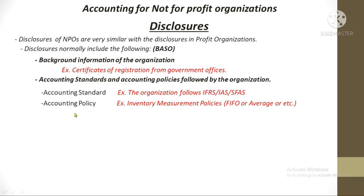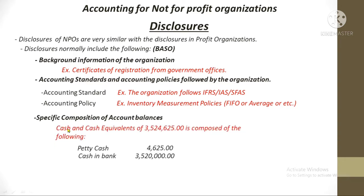S stands for the specific breakdown or composition of accounts. For example, cash and cash equivalents of 3,524,625 is composed of petty cash of 4,625 and cash in bank of 3,520,000. The cash in bank can be further broken down by individual bank account, since an organization normally has multiple bank accounts possibly in different banks.